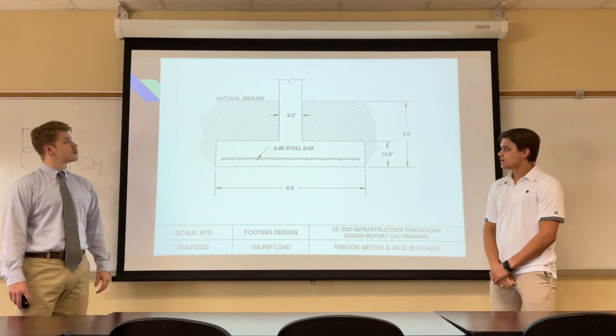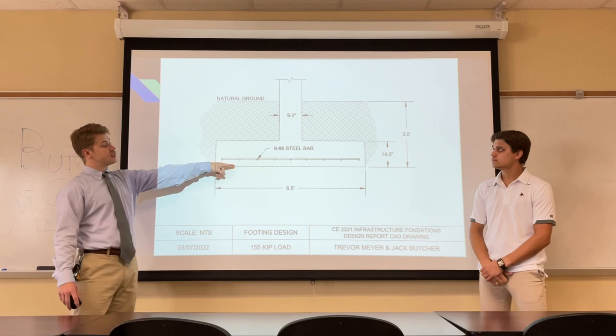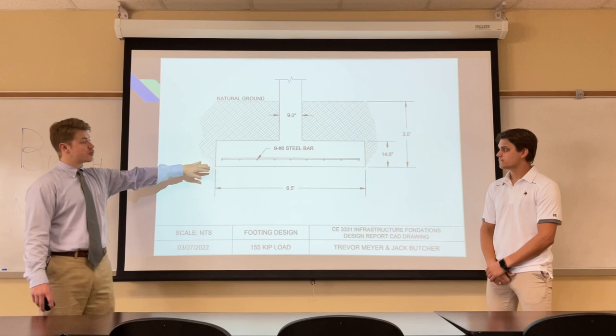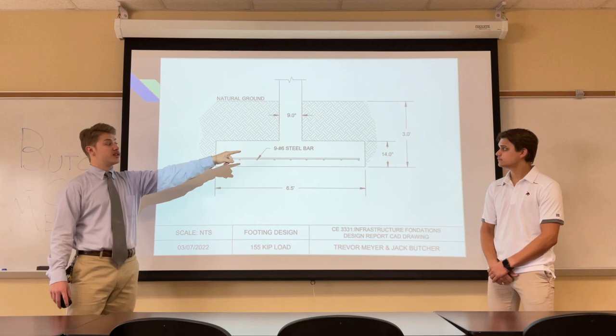This is our final design of our footing, drawn to scale. It is embedded 3 feet into the soil, with a 9-by-9-inch square column on top, a 6.5-foot square footing with 9 number-6 steel bars, and it is 14 inches thick.